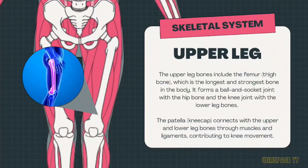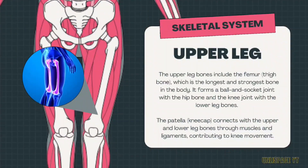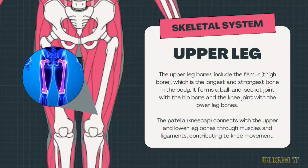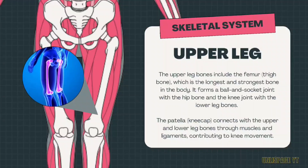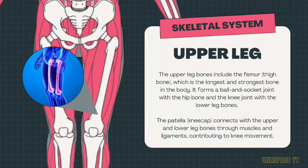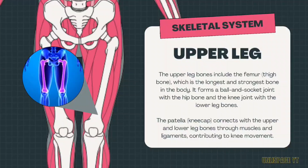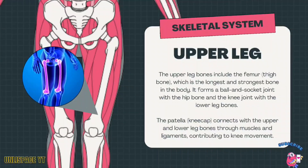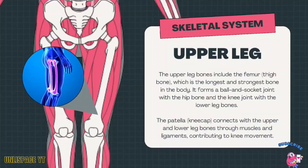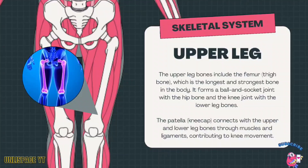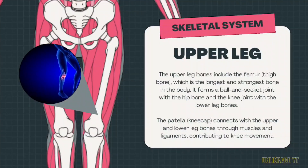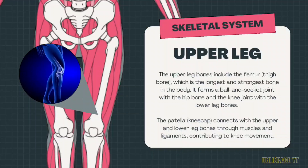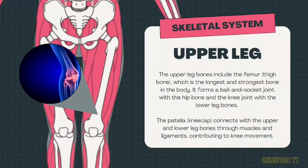The upper leg bones include the femur, or the thigh bone, which is the longest and strongest bone in the body. It forms a ball and socket joint with the hip bone and the knee joint with the lower leg bones. The patella, or the kneecap, connects the upper and lower leg bones through muscles and ligaments, contributing to knee movement.